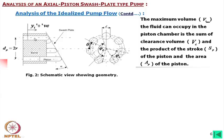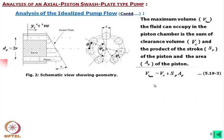If dp is the piston diameter, then Ap = π·d²/4. The volume of fluid handled by one piston is Ap times the stroke length, plus a clearance volume Vc. So Vi_max = Vc + Sp × Ap. Remember this is for one piston.